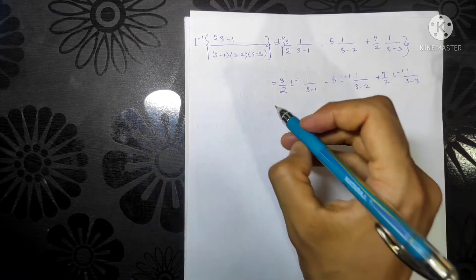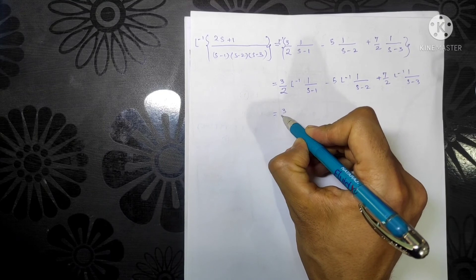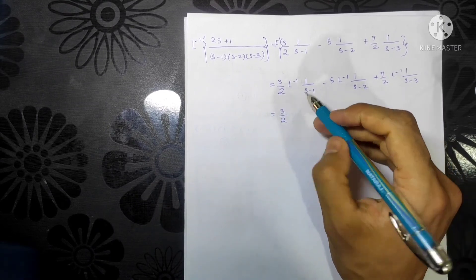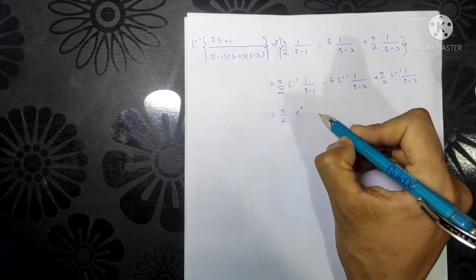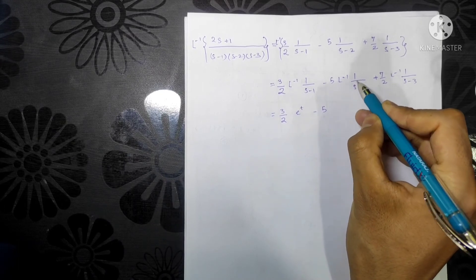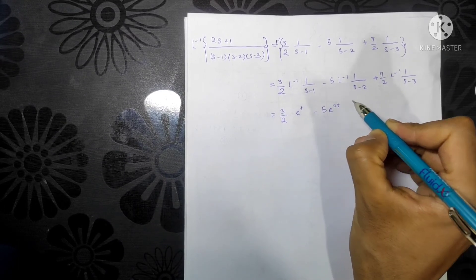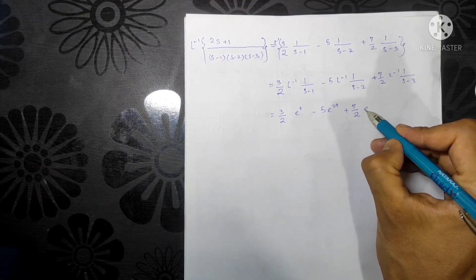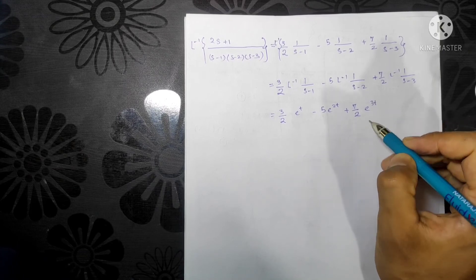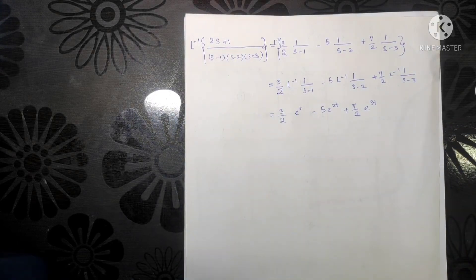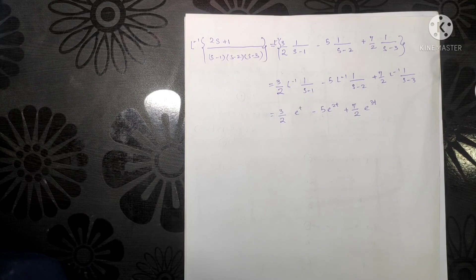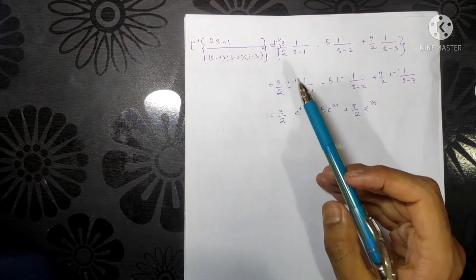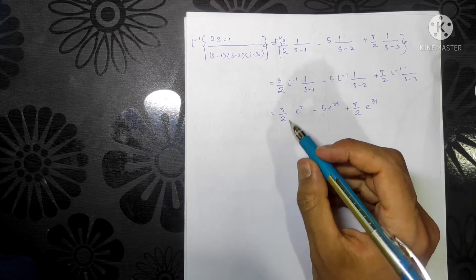This gives the final answer: (3/2)e^t minus 5e^(2t) plus (7/2)e^(3t). That is the Laplace inverse of our original expression. Now I want to share the trick I use to quickly find Laplace inverses of functions like 1/(s minus 1).